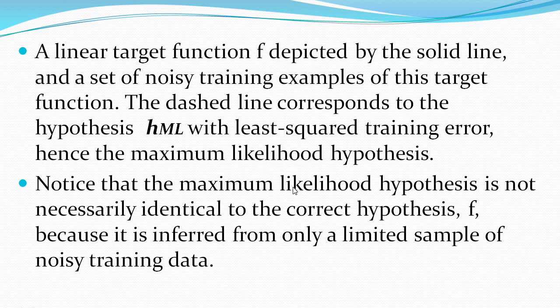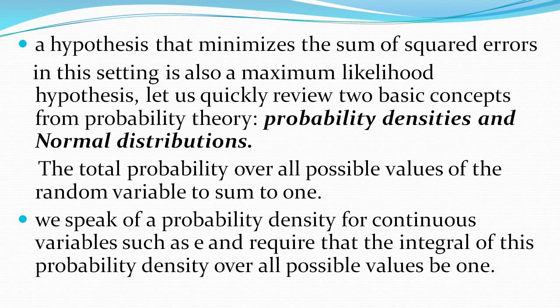This maximum likelihood hypothesis will not necessarily be identical to the correct hypothesis, because whenever we are considering a limited sample of noisy training data, the dashed line represents the maximum likelihood hypothesis with the least squared training error. To get that hypothesis — to minimize the sum of squared errors and find the maximum likelihood hypothesis — two basic concepts are required: probability densities and normal distributions.